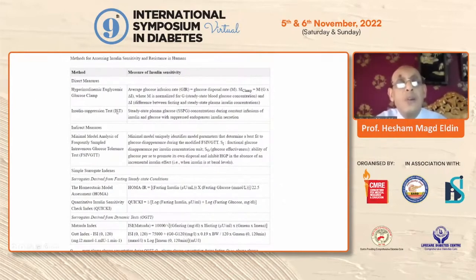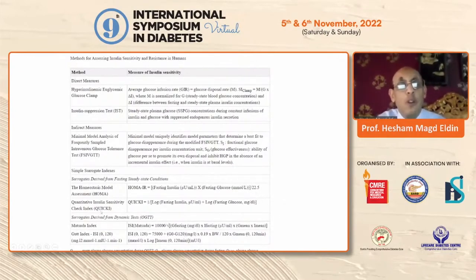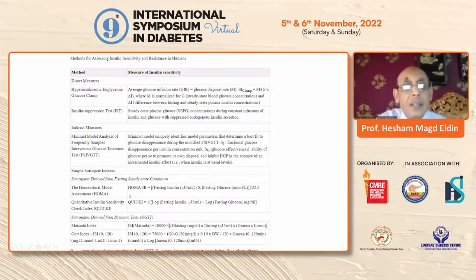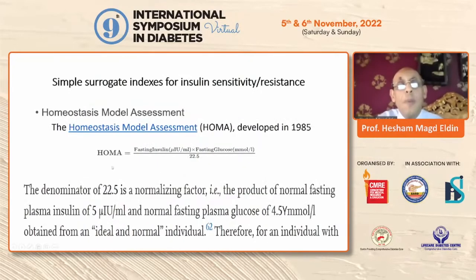There are also simpler surrogate indices derived from fasting steady state — the homeostasis model HOMA-IR. In this test, a simple fasting sample is drawn to measure fasting insulin and fasting glucose, which are multiplied together and divided by 22.5. The reverse of the log of this equation is called QUIKI — the quantitative insulin sensitivity check index. We can also use the oral glucose tolerance test, giving 75 grams of glucose and measuring insulin and glucose, using indices like the Matsuda index or Gutt index.